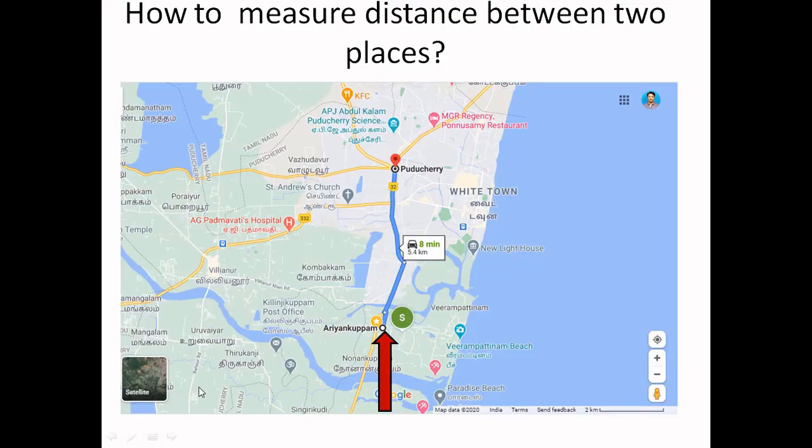And also how to measure the distance between two places. It can be measured by means of map. So nowadays we are using Google Maps. In that when you have been putting starting point and end point, the distance will be covered by means of kilometers. So it is about 5.4 kilometers from Ariane from Pondicherry. And mostly in the maps it will be given in kilometers.